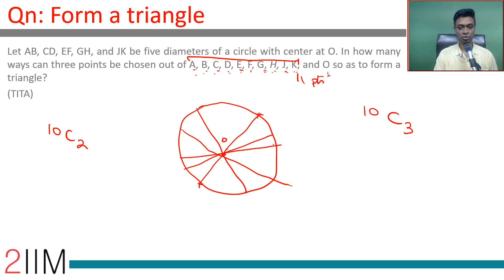So, 10C3 + 10C2, and then from this subtract 5—the 5 selections of AB, CD, EF, GH, and JK. A-O-B, C-O-D, E-F-O, G-O-H, J-O-K will not be triangles. Pretty much anything else will be a triangle.